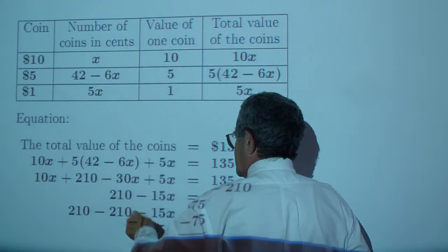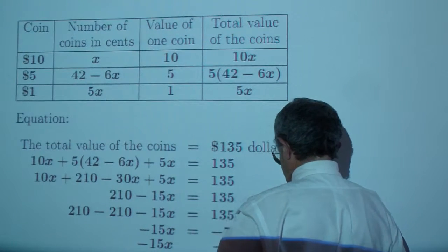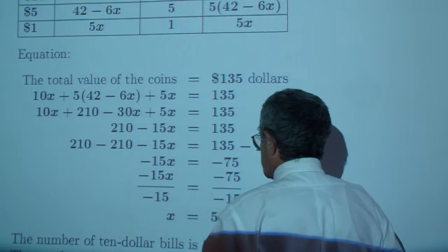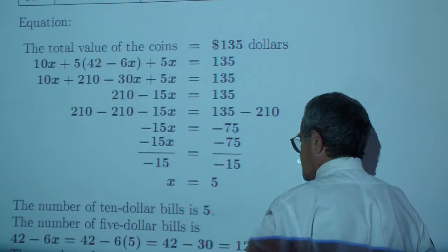Distribute. Collect like terms. Subtract 210 from both sides. Divide by negative 15, and you get X, which is 5.